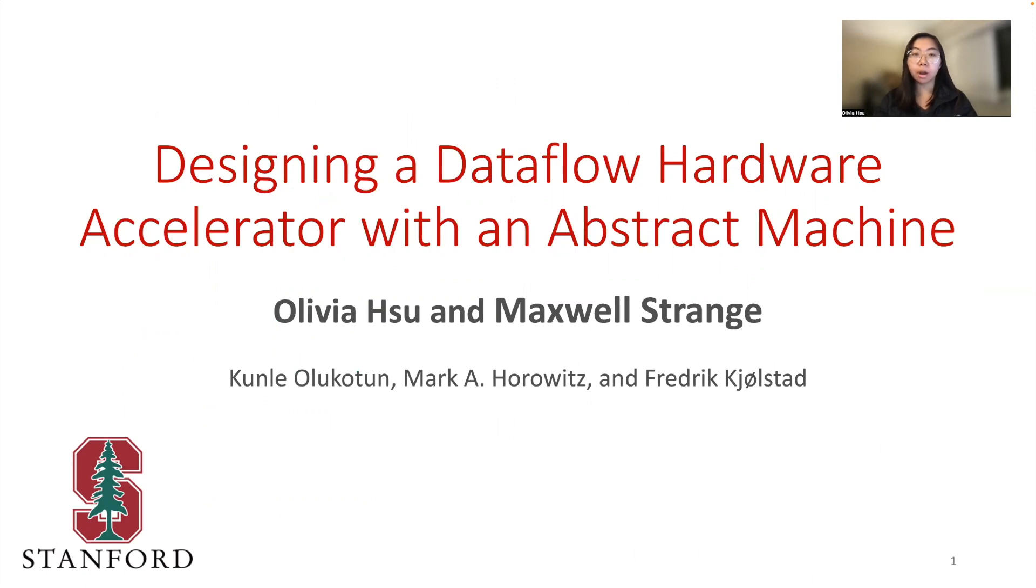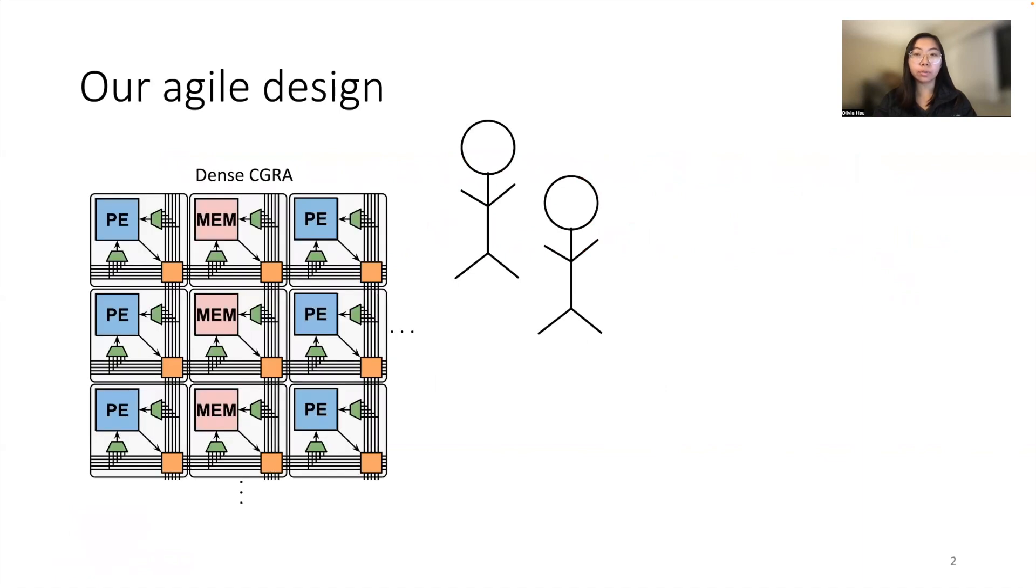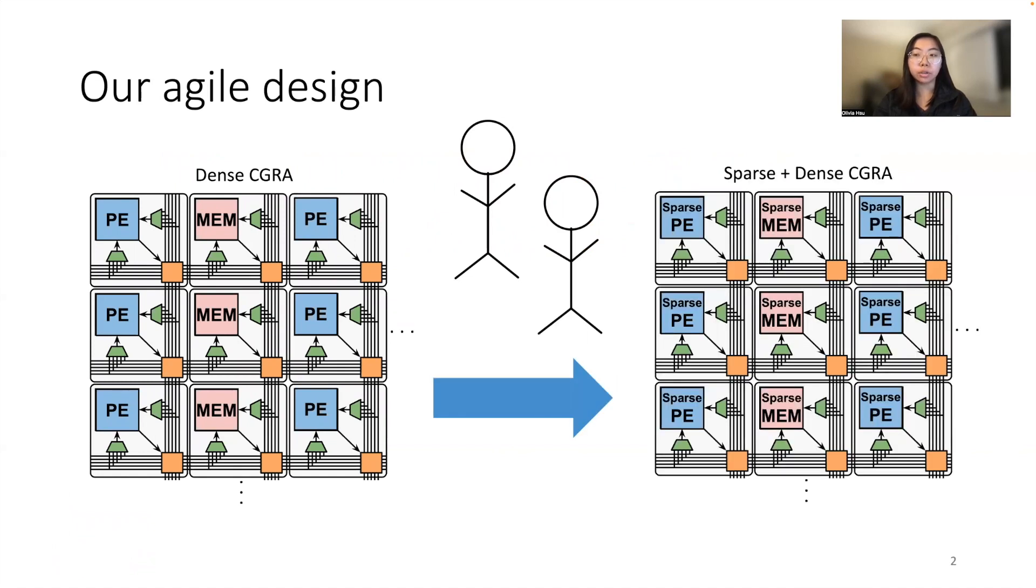My name is Olivia and I will be talking about designing a dataflow hardware accelerator with an abstract machine. The goal of our project was to take an existing prior work dense coarse grain reconfigurable array, or CGRA, and build a fully sparse and dense CGRA fabric.